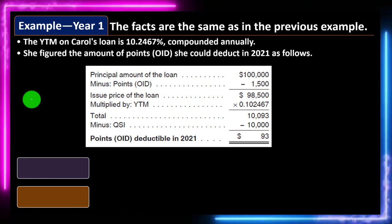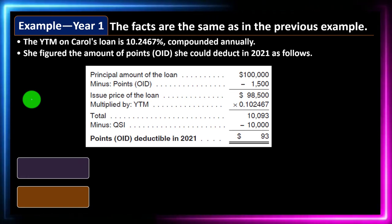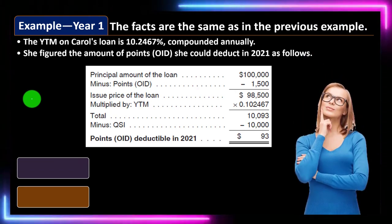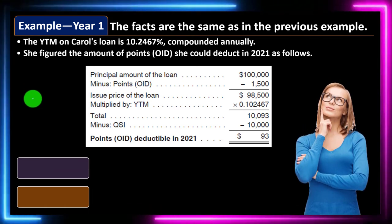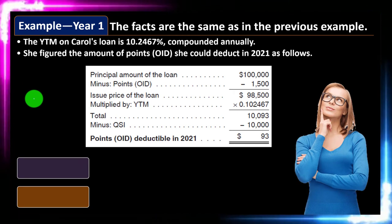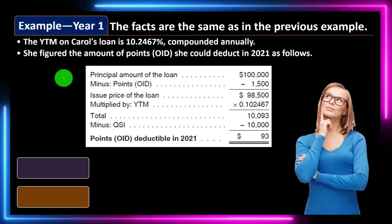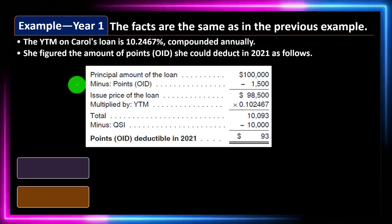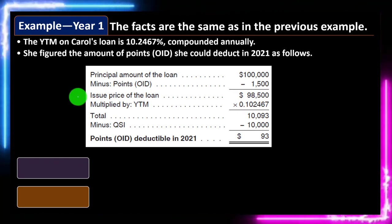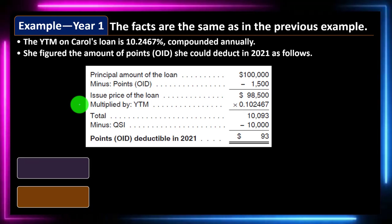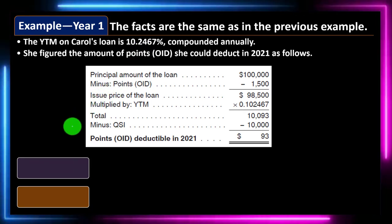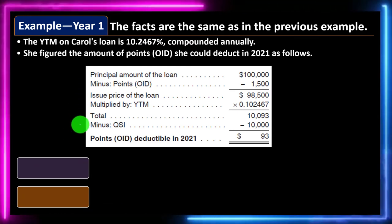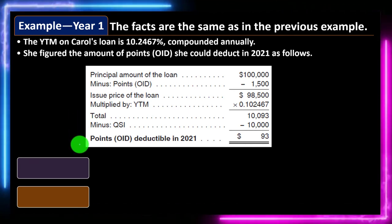Example — Year 1: Using the same facts, the YTM on Carol's loan is 10.2467%, compounded annually. She figures the OID she can deduct in 2021 as follows: $100,000 (principal) minus $1,500 (points/OID) = $98,500 issue price, multiplied by the YTM of 0.102467 = $10,093, minus the QSI of $10,000 = $93 deductible points for year one.